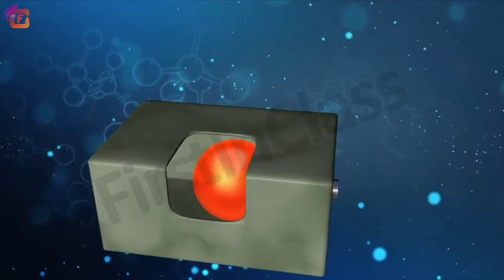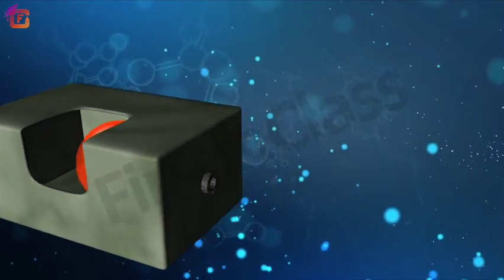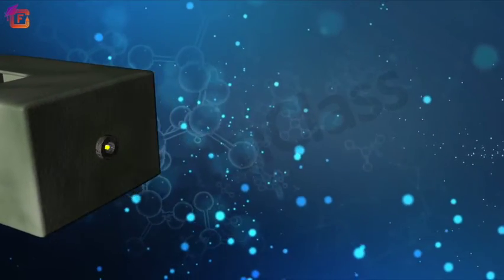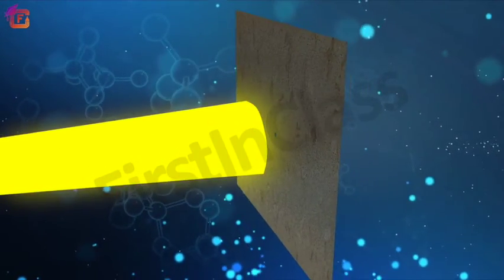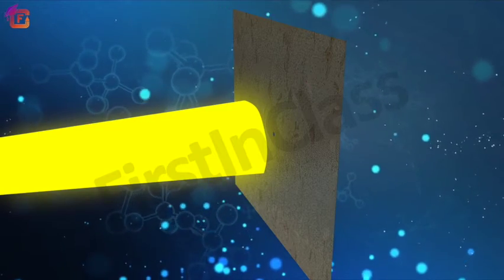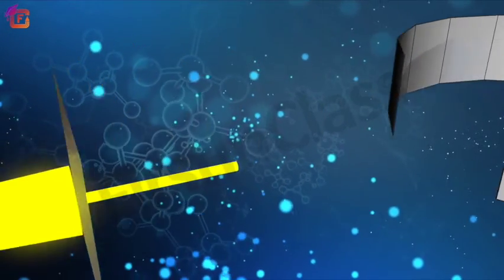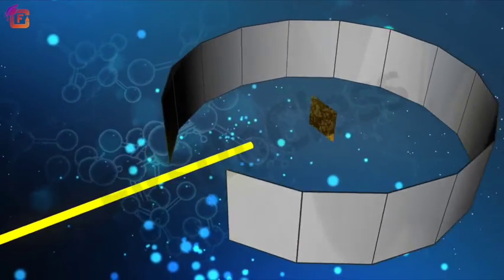A stream of high energy alpha particles from a radioactive source was directed at a thin foil with a thickness of about 100 nanometers of gold metal. The thin gold foil had a circular fluorescent zinc sulfide screen around it.